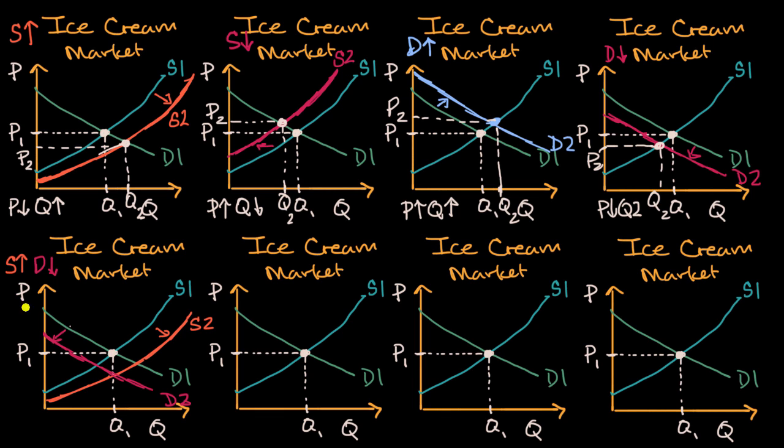And so what is our new equilibrium point? At least how we've drawn it right over here. So our new equilibrium point looks like this. It's clear that our price went down. So price has gone down, but what about quantity?